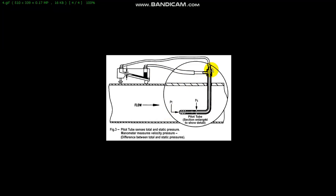When using the pitot tube inside the duct you will get the velocity pressure reading on the manometer. You then need to convert this velocity pressure reading into velocity, and then using the formula Q = V × A you can get the actual flow rate.